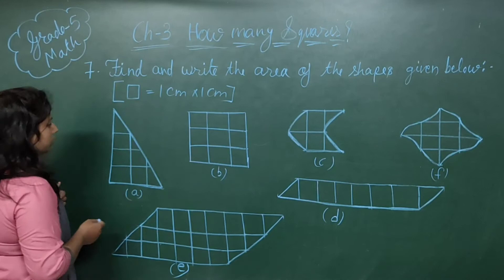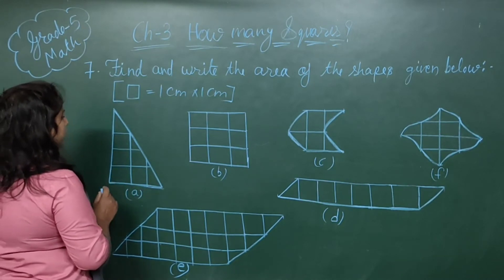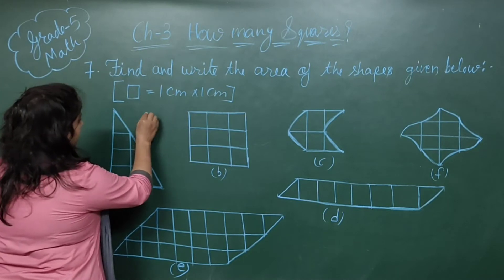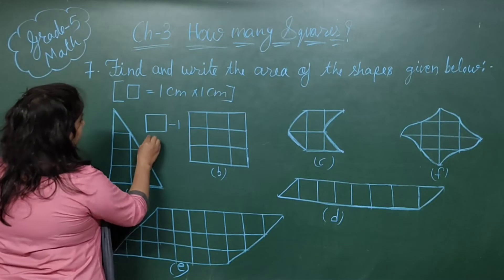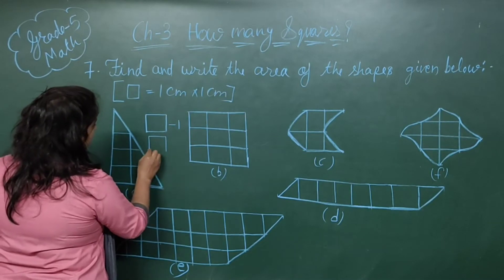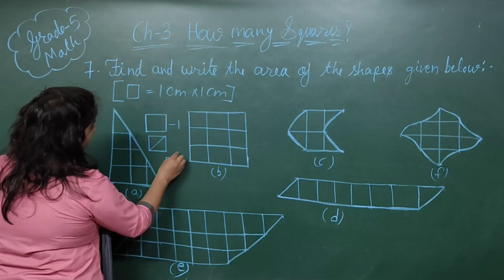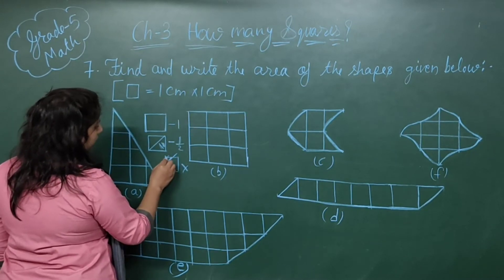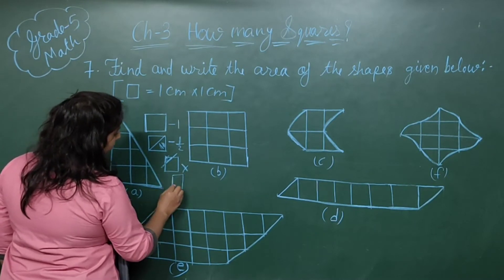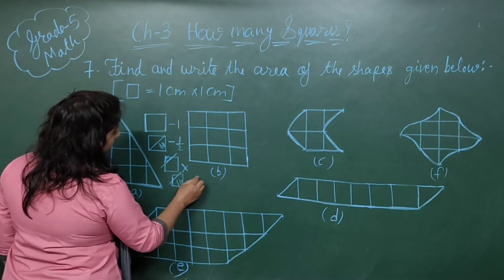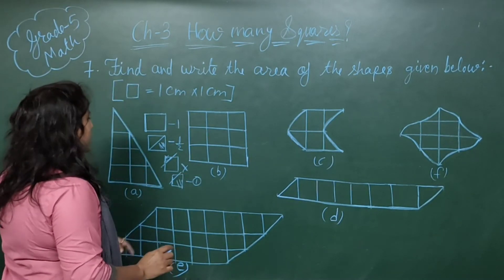For that, we have to count the complete squares first. A complete square counts as 1. A half square or less than half, we have to omit. But if more than half, we have to count it as a complete 1. Using this rule, we can find the area.